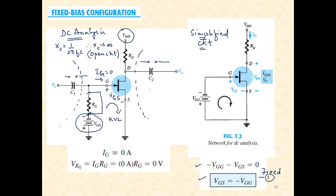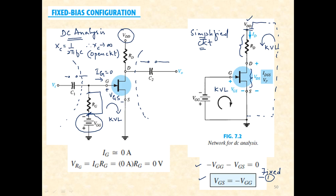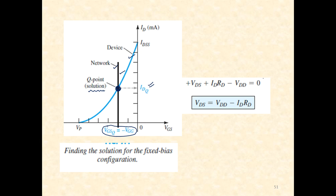There are two loops: the input and output loop. We applied KVL for the input loop; KVL can also be applied for the output loop. VDD is positive and the negative end is grounded. Applying KVL to the output loop: VDD equals the drop across RD plus the drop across drain-to-source terminals of the JFET, giving VDS equals VDD minus ID·RD.